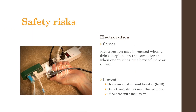Now we move on to safety risks. Firstly, we have electrocution. This can be caused when a drink is spilled on the computer device or when one touches an electrical wire or socket. You can prevent it by using a residual current breaker, or RCB for short. Keeping drinks near the computer should also be avoided, and you should check the wire insulation regularly.